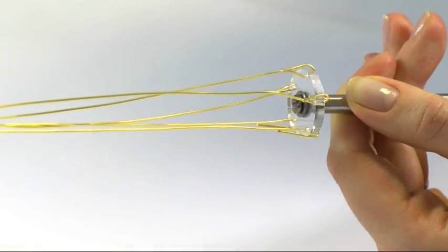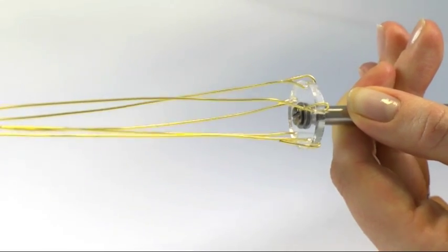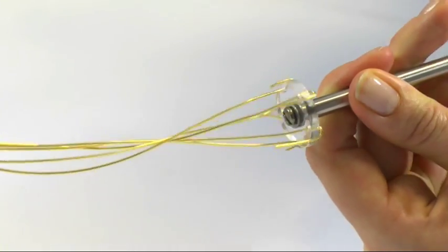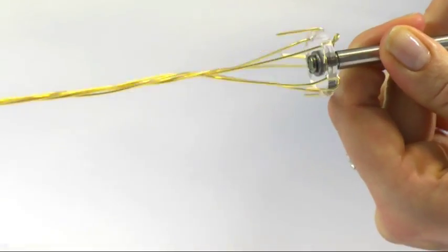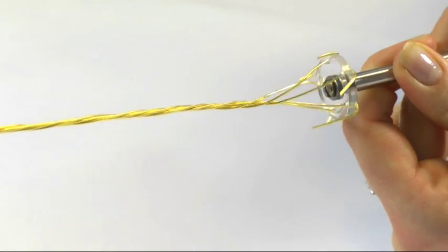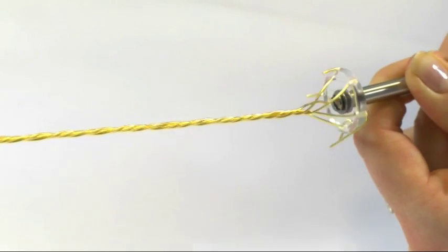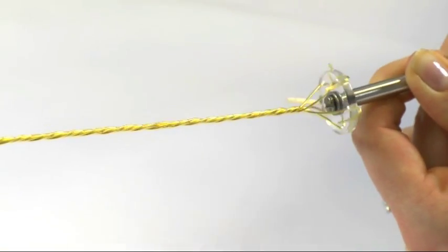So making sure all five wires are secure and the other end is clamped in some way, you just start to turn the handle. And it just gently twists your wire to make one nice strong twisted wire.